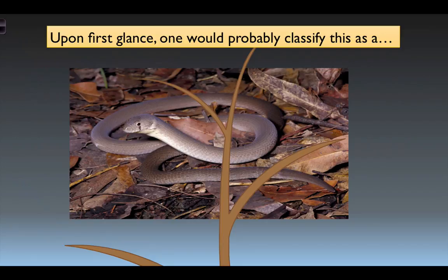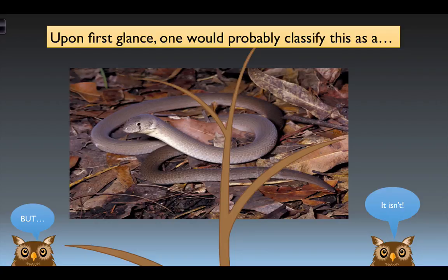Let's go ahead and get started. Let's imagine you're walking through the forest and you happen to spot this little critter on the forest floor. Upon first glance you may possibly classify this as a — and I'm guessing in your mind you're coming up with a word — but the problem is it isn't that thing. How do we know that? We know by looking at its characteristics.